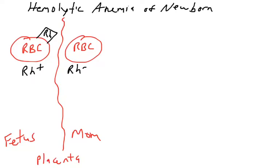Hemolytic anemia of newborns starts with a protein on the surface of red blood cells called the Rh factor, or the rhesus factor. Rh factor is a protein found on the surface of some people's red blood cells, assuming that they are Rh positive. Genetically, some people inherit the genes to produce the Rh protein — those people are called Rh positive. Some people don't express the protein; they are Rh negative. So a person's red blood cells can either be positive or negative for the Rh factor.